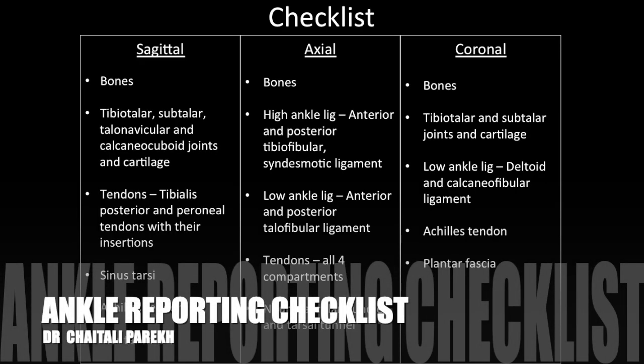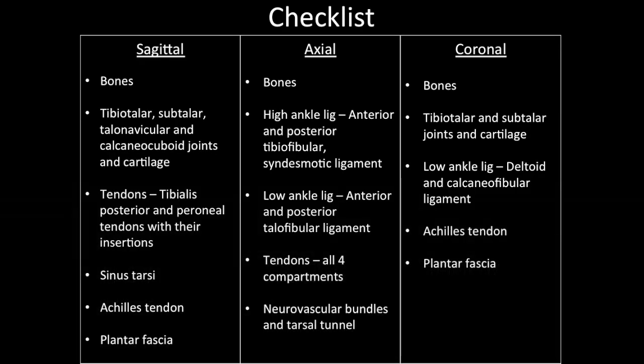We have discussed the normal appearances of structures in the ankle joint on MRI. This is a checklist of those structures which are better seen on sagittal, axial, and coronal images. But please make sure to look at these structures on other planes as well, particularly when you are in doubt whether they are injured or not.